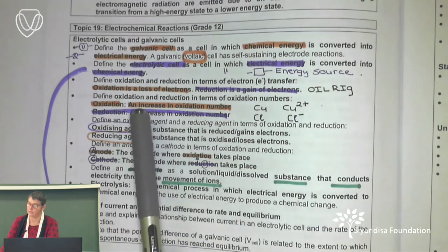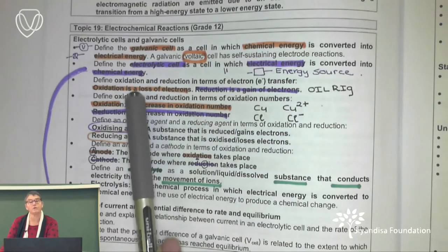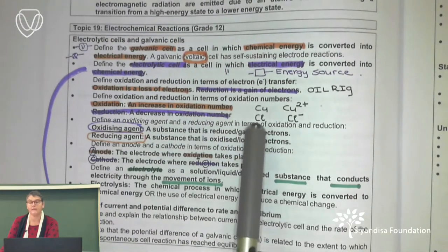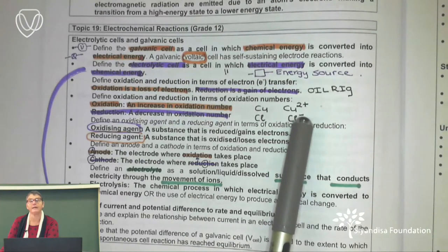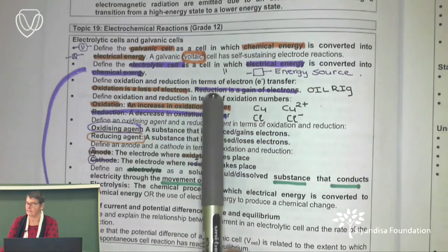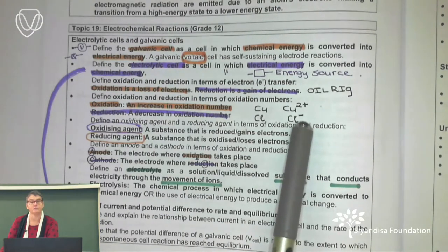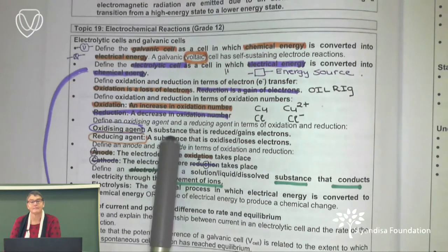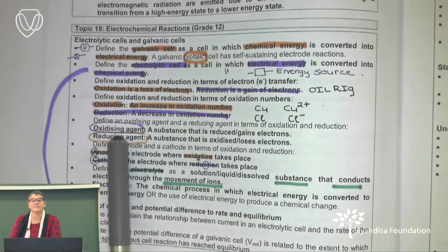It is oxidation because there was an increase in the oxidation number. Reduction is a decrease in the oxidation number — for example, chlorine became Cl⁻, so from zero it went to negative one, meaning the oxidation number decreased. In the other definition it is a gain of electrons; for chlorine to become negative, it had to gain electrons. The one that many of us struggle with is the agents.